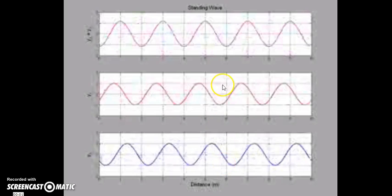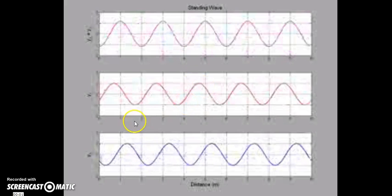In this video we'll be looking at how standing waves are formed. Standing waves are formed when two similar waves are superimposed on each other and these two waves are moving in opposite directions. These are the two waves moving in opposite directions, and when they superimpose they give you the resultant wave, which is a standing wave.